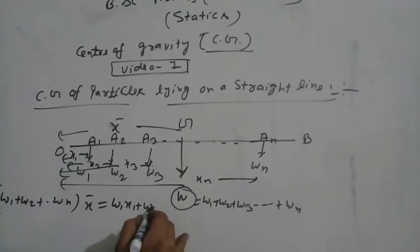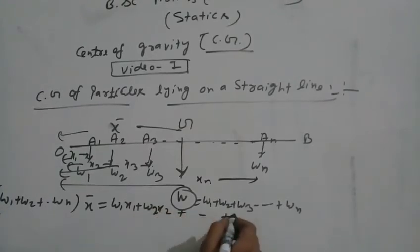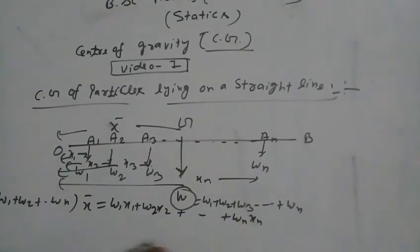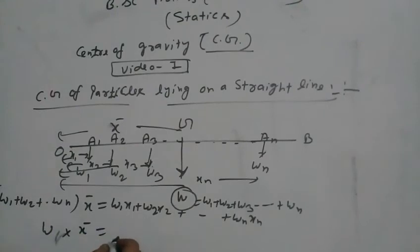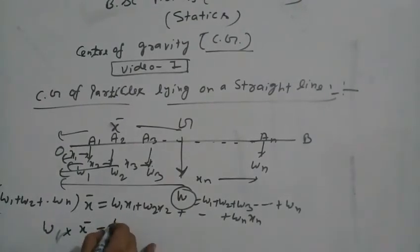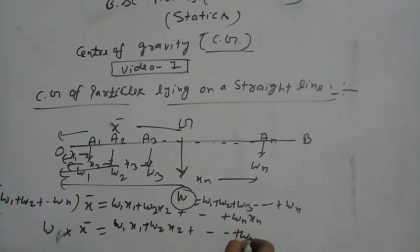W1 x1 plus W2 x2 plus dot dot dot plus WN xn. Therefore, x bar equals summation Wx upon capital W.